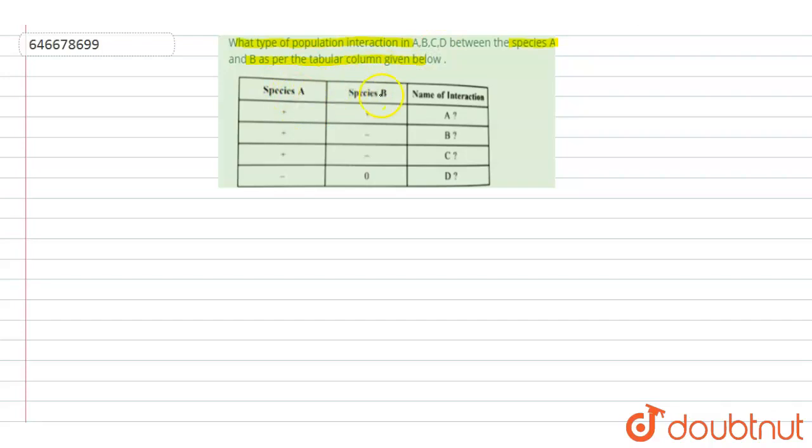If you will see the first interaction, the plus sign means benefited. The negative sign means harmed, and zero means neutral - neither harmed nor benefited. That is neutral, no effect.